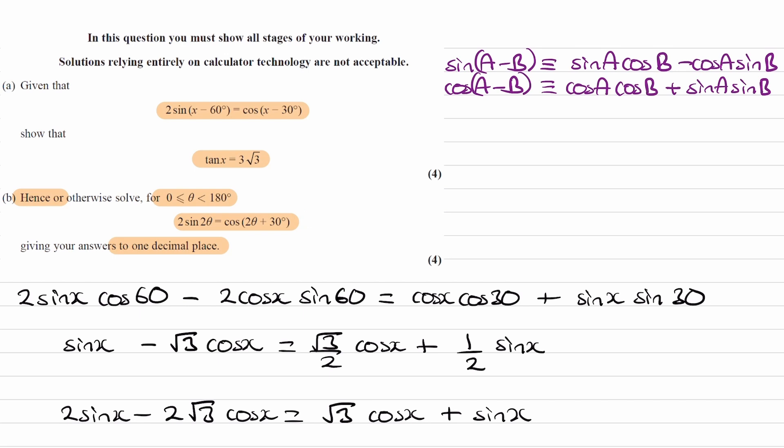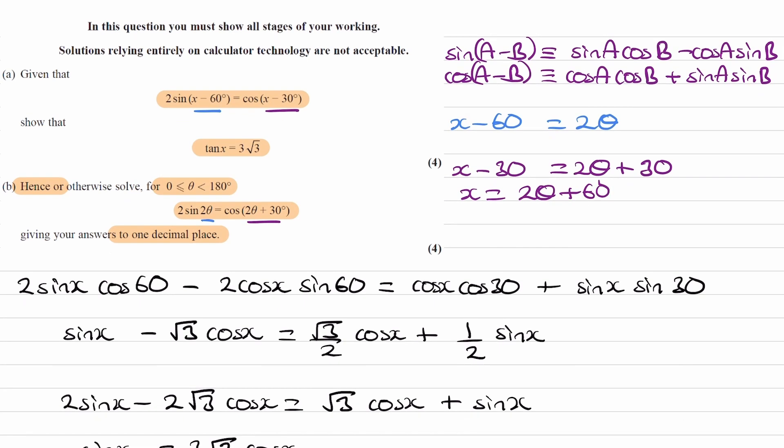What we can do is we can set x - 60°. To work out what the substitution would be, let's set x - 60°, what we have over here, equal to 2θ. And similarly, let's set x - 30° to 2θ + 30°. I'm going to rearrange both of these things for x. This one becomes x = 2θ + 60°. And the blue one also becomes x = 2θ + 60°. What that means is, to go from here to here, we have made a substitution. We have let x equal to 2θ + 60°.